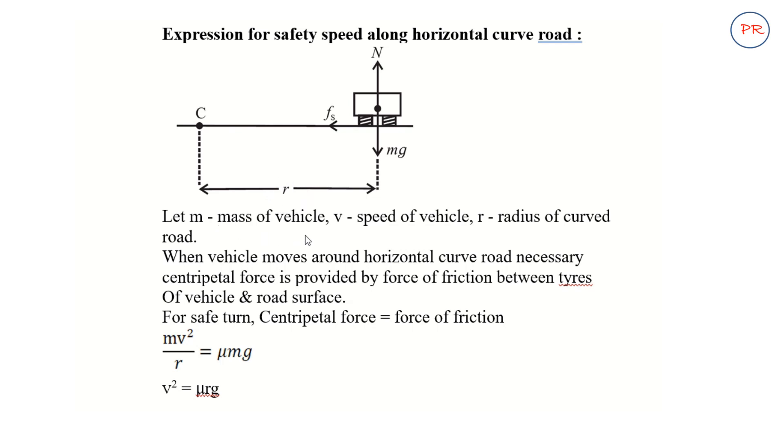Let m be the mass of the vehicle, v be the speed of the vehicle, and r is the radius of the curved road.